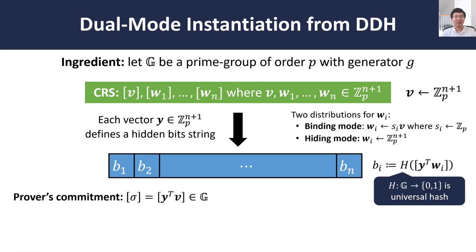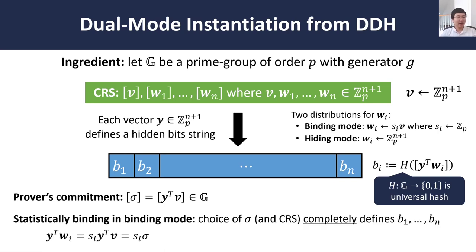Now let's consider the main properties: binding and hiding. The binding property holds because if we sample the wᵢ's in the binding mode — namely wᵢ is a scalar multiple sᵢ of the vector v — then the value y^T v, the prover's commitment, fully defines the value of the hidden bit. Namely, y^T wᵢ is just y^T · sᵢ · v, or y^T v times the scalar sᵢ. But y^T v is precisely the commitment, and so once we have chosen y, we have completely defined the value of y^T wᵢ and thus the value of the hidden bit. This is why this construction provides statistical binding.